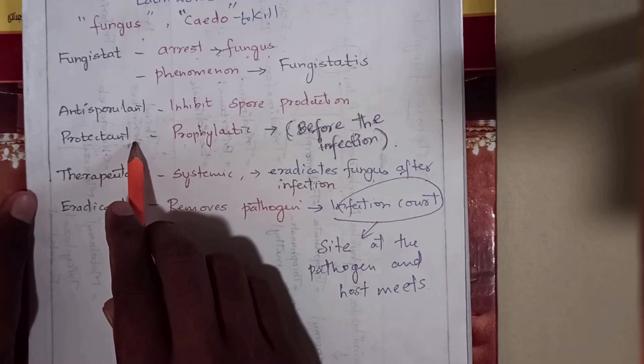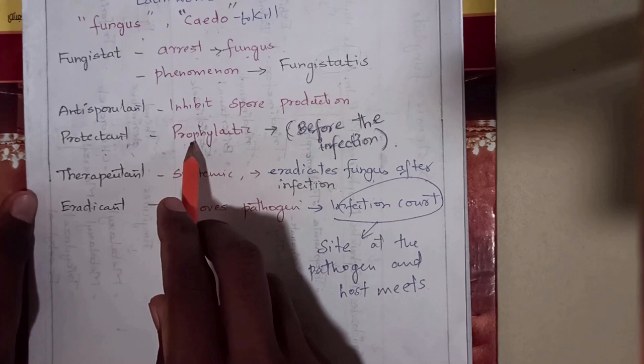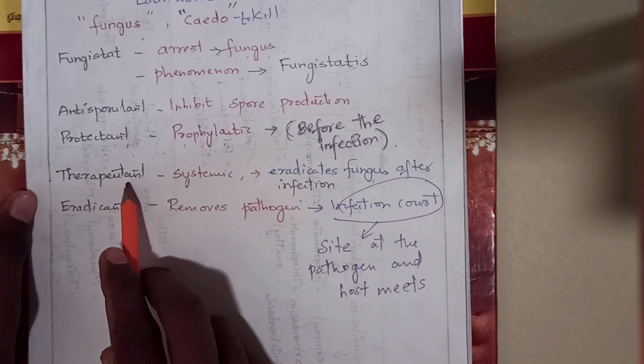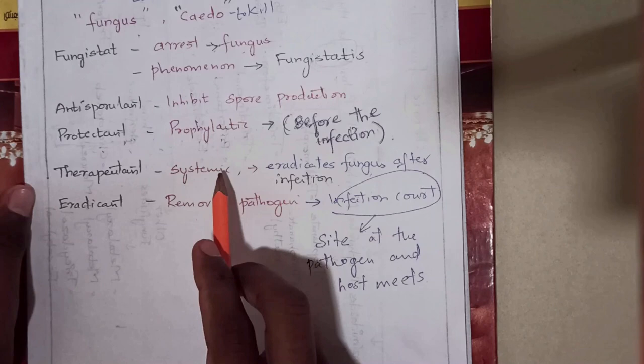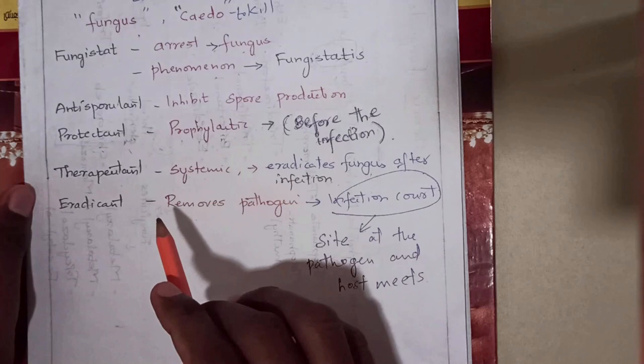Protectant fungicide acts as a protectant against diseases caused by the fungus. Therapeutic fungicide is a systemic fungicide; after application in the host, it translocates and spreads through the roots and shoots within the plant, and actually eradicates the fungus after infection.